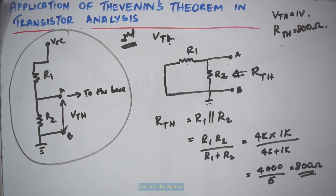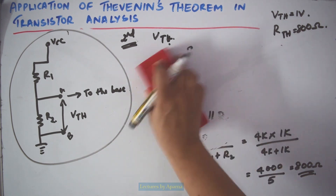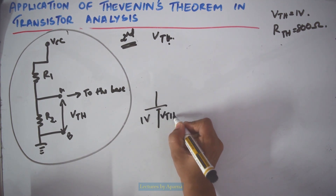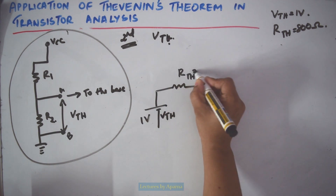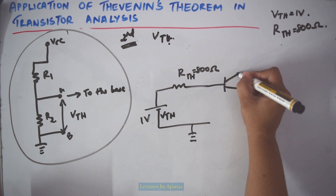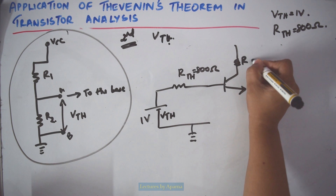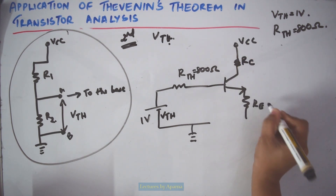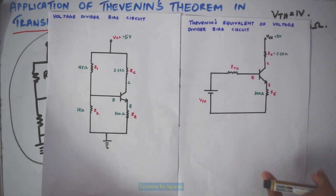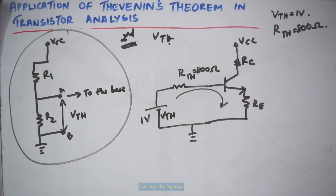Now I have to draw the Thevenin's equivalent circuit. There is VTH of 1 volt, then the Thevenin's resistance RTH of 800 ohm. This terminal will be connected to the base of the transistor. Connecting it back: this will be RC, this will be VCC, here there will be RE, and here the ground will be connected. This is the Thevenin's equivalent circuit. Now you can easily do the analysis on the input side. In this way Thevenin's theorem can be used in transistor analysis.